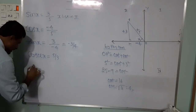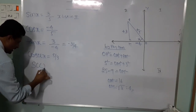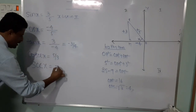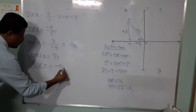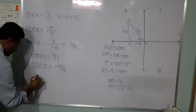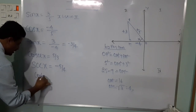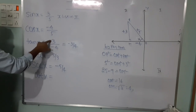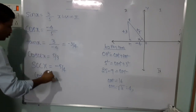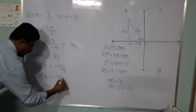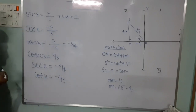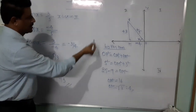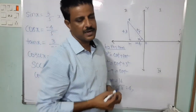Cosecant x is the reciprocal of sin x. Secant x equals the reciprocal of cos x: 5 divided by minus 4, otherwise minus 5 divided by 4. Cotangent x equals the reciprocal of tan x: the reciprocal of 3 by minus 4 is minus 4 by 3. These are the results of the second problem.